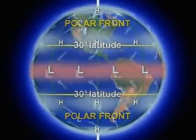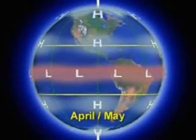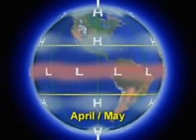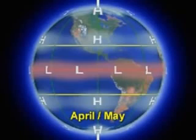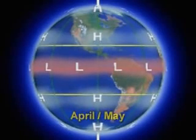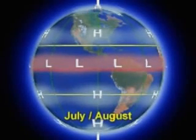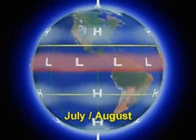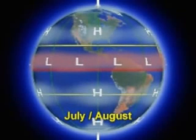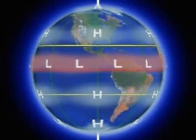The latitude at which the sun is directly overhead changes with the seasons. Since Hadley cell circulation is driven by this heating, we can expect elements of the Hadley cell to migrate as well.